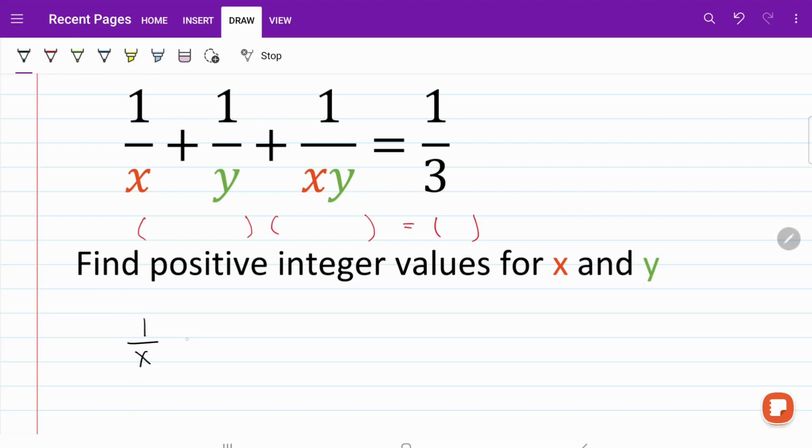I have 1 over x plus 1 over y plus 1 over xy is equal to 1 over 3. The first thing that we need to do is to find some sort of common denominator. We can do that by multiplying 3xy on both sides.